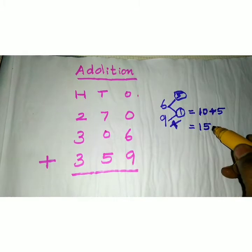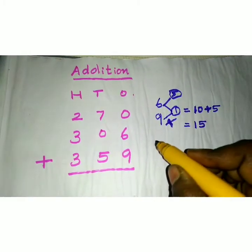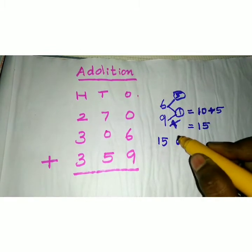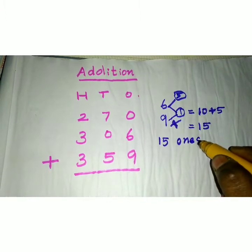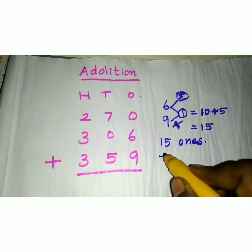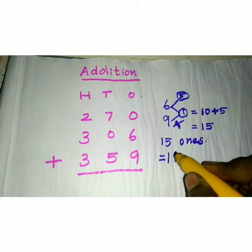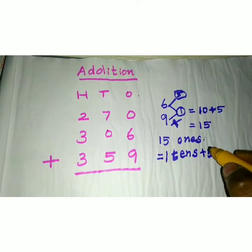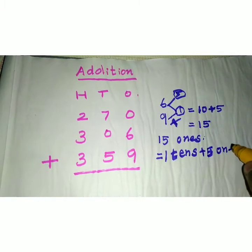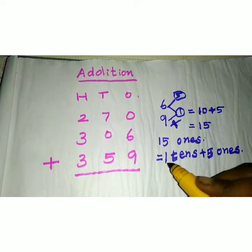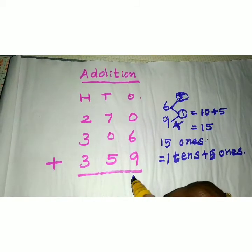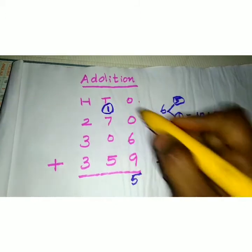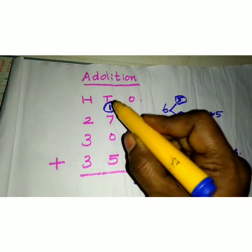Now, how many ones are there? 5 ones are there. That means from 15 ones, you have to separate the tens and ones. From 15 ones, 10 ones are equal to 1 ten. So you have to take away 1 ten from 15 ones, leaving 5 ones. You have to write the answer in the ones place as 5, because we have only 5 ones in 15 ones. Then 1 ten will be moved to the tens place. This is called regrouping.